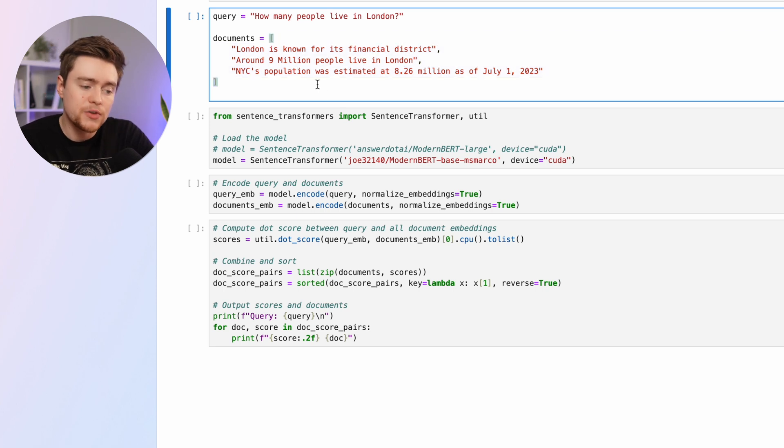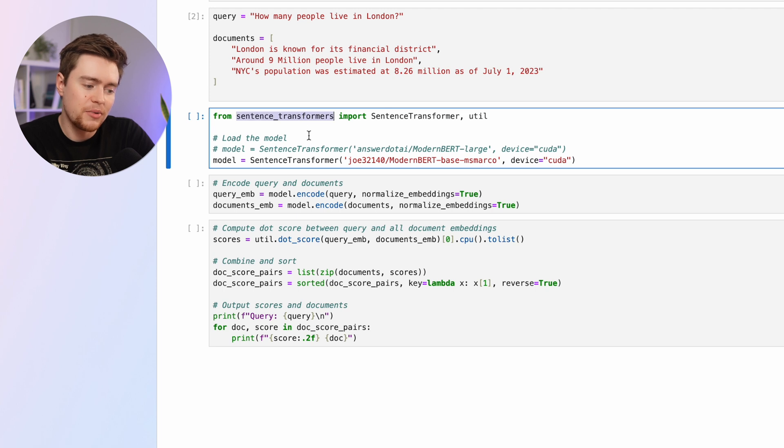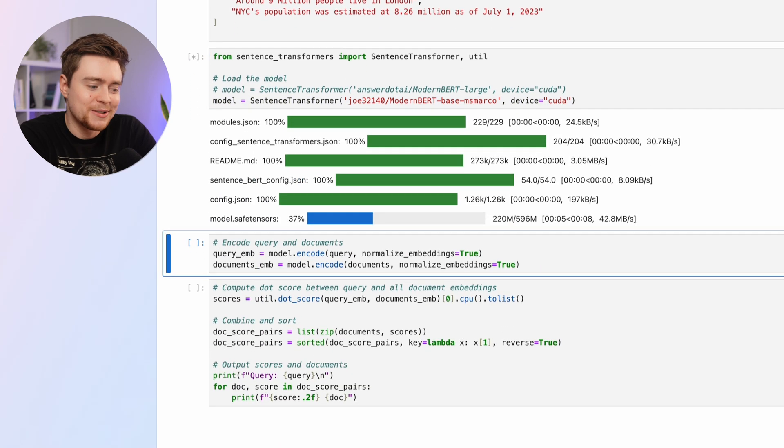To do this, I'm using the Sentence Transformers framework that will make it very easy for us to compute dense vector representations for our sentences. Here we can load the original Modern BERT model, but someone has already fine-tuned Modern BERT on MS MARCO, which is a dataset for retrieval, so I will use that instead.